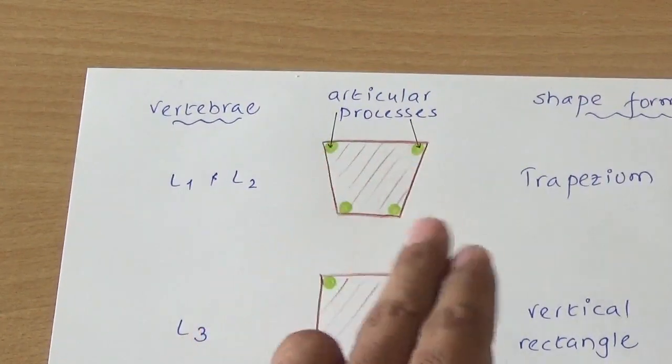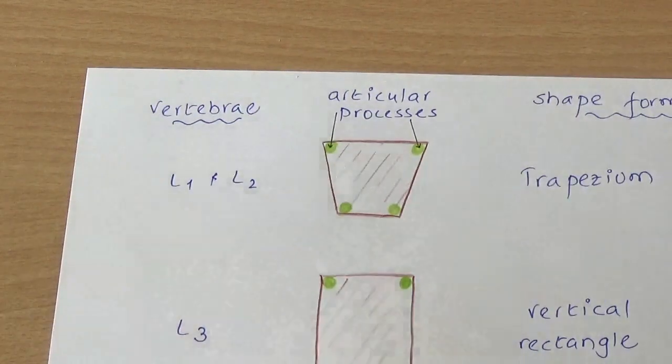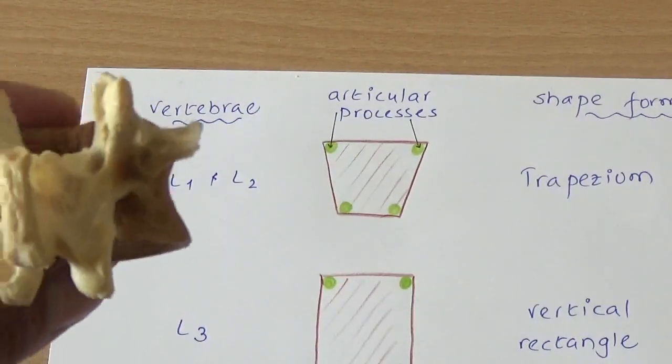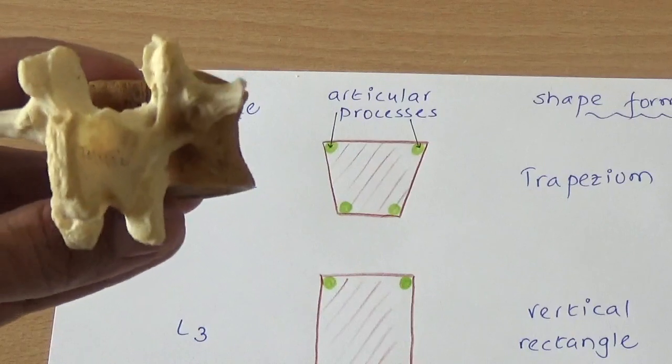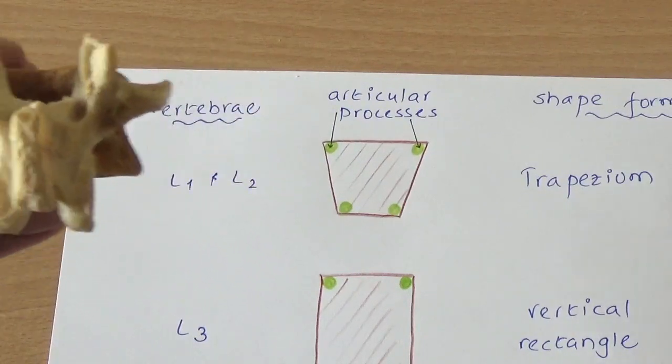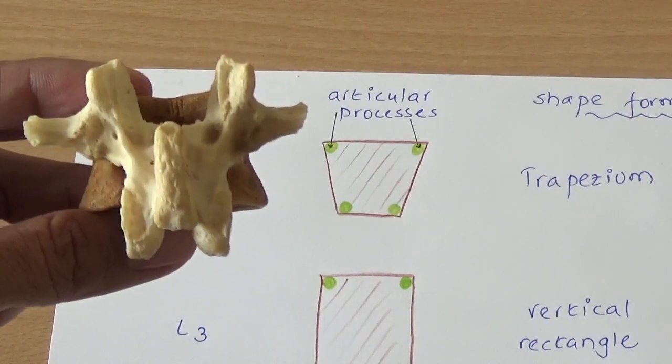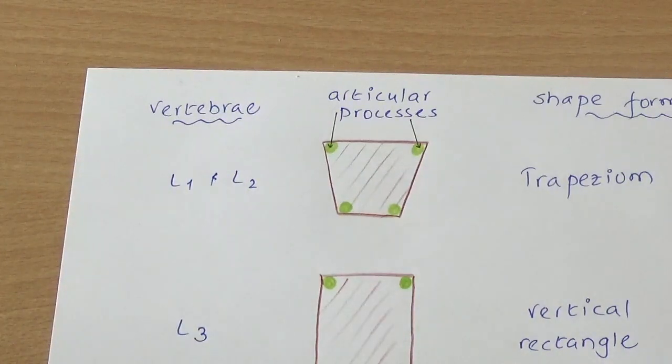The distance is more in case of the superior articular process as compared to the inferior one, so it will become a trapezium in shape for L1 and L2. You can clearly make out over here, see this. So this can be L1 or L2.